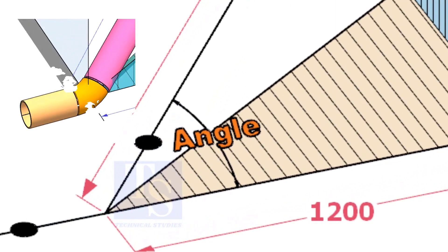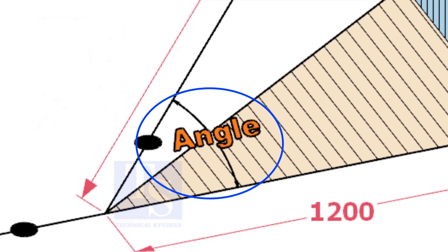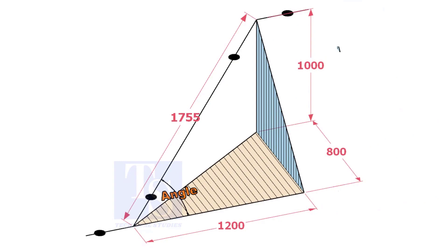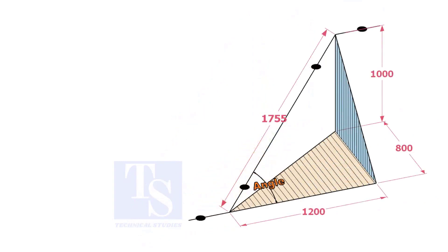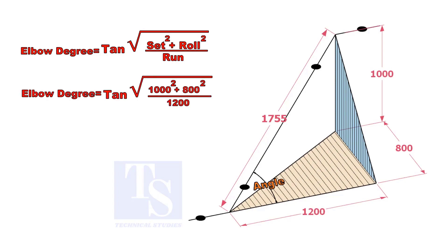Let us calculate the degree of the elbow or the including angle. The formula is the root of the set and the roll divided by run into tan.